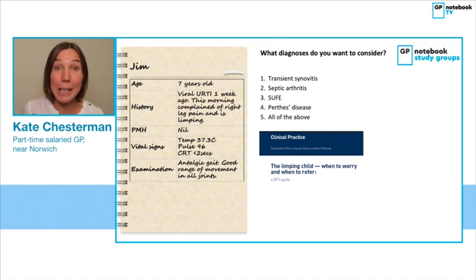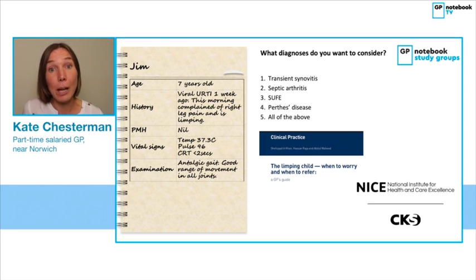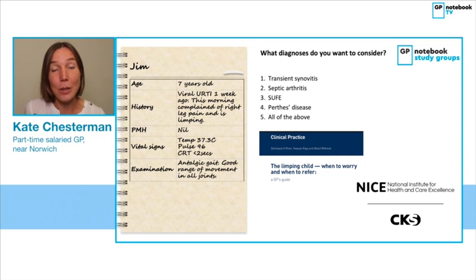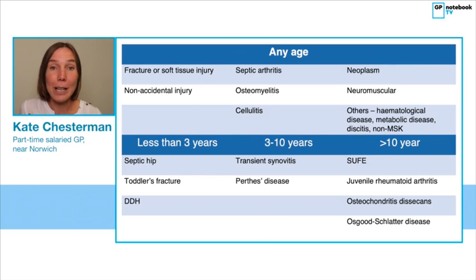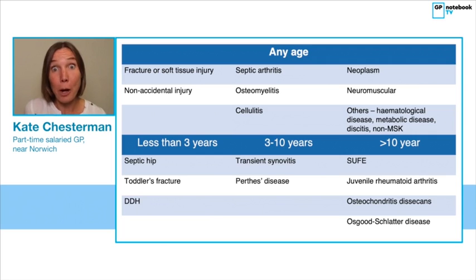My two main resources for this topic were a very good article in the British Journal of General Practice from just last year on the limping child — when to worry and when to refer — and also a very helpful NICE clinical knowledge summary on acute childhood limps, also updated in 2020. One of the really helpful things both resources did was to separate the list of possible differentials into age groups, which I found a helpful way of bringing down that big list into more manageable groups.